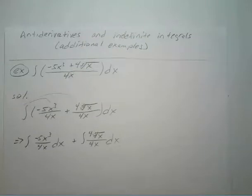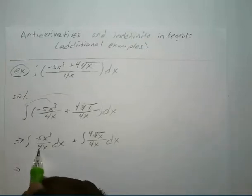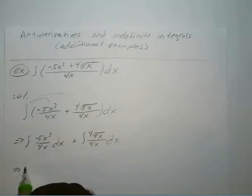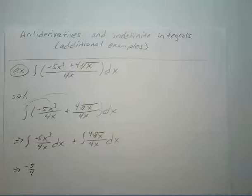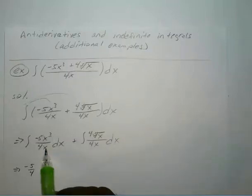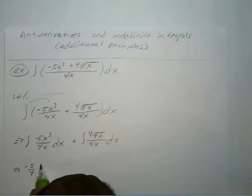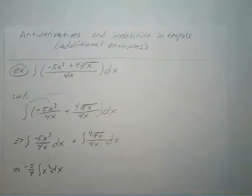Now once you do that, go ahead and simplify each term. So you have negative 5 over 4 — remember that's a constant so you can bring it out to the front. You have x to the third divided by x to the first, which is just x squared. That's the integral of x squared with respect to x.